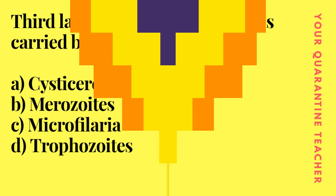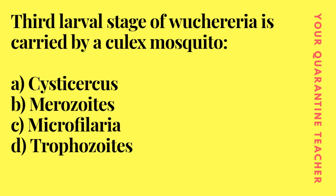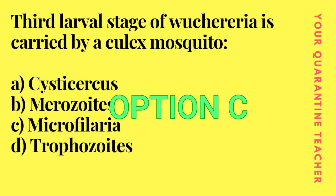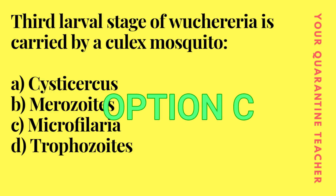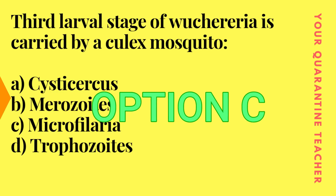The third question: the larval stage of Wuchereria is carried by the Culex mosquito. Option A Cysticercus, Option B Miracidium, Option C Microfilaria, Option D Trophozoite. Option C Microfilaria is the correct answer.